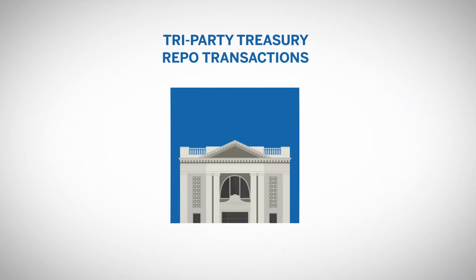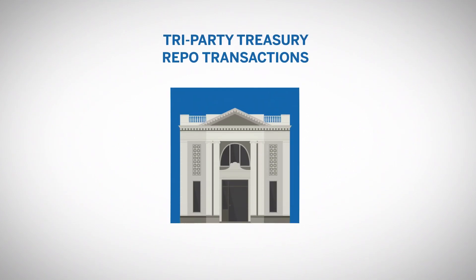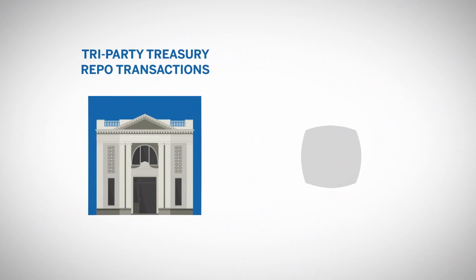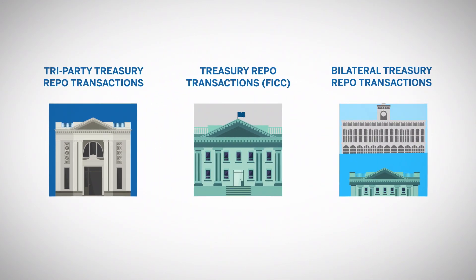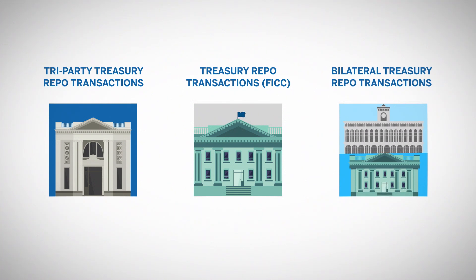The three data sources are: triparty Treasury repo transactions cleared and settled by Bank of New York Mellon, excluding general collateral financing repo and transactions in which the Federal Reserve is a counterparty; Treasury repo transactions occurring within the Depository Trust and Clearing Corporation's GCF service where the Fixed Income Clearing Corporation acts as a central counterparty; and bilateral Treasury repo transactions cleared through Fixed Income Clearing Corporation's Delivery vs. Payment service.